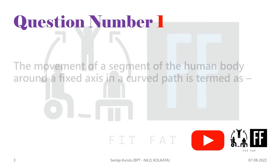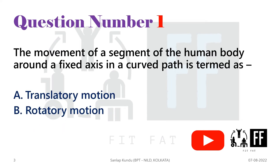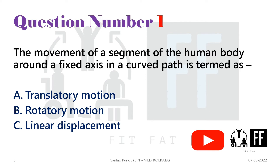Now question number one: The movement of a segment of the human body around a fixed axis in a curved path is termed as — option A: translatory motion, option B: rotatory motion, option C: linear displacement, and option D: general motion.